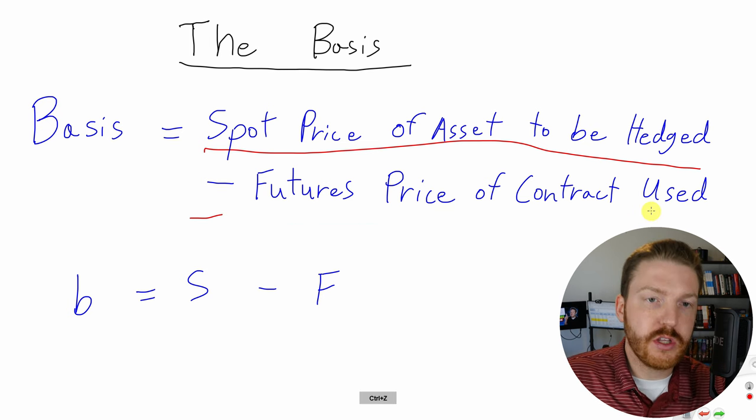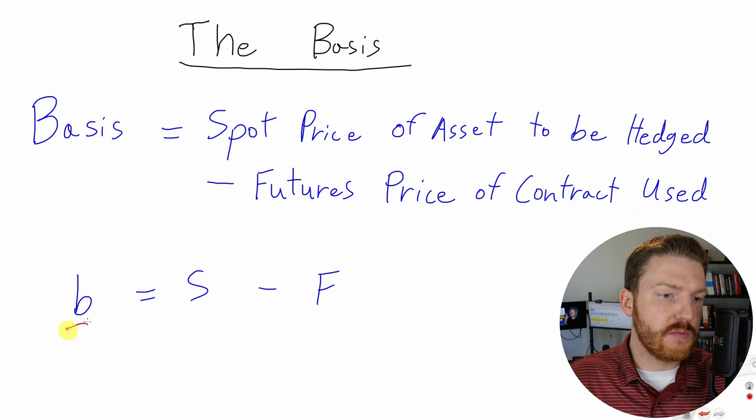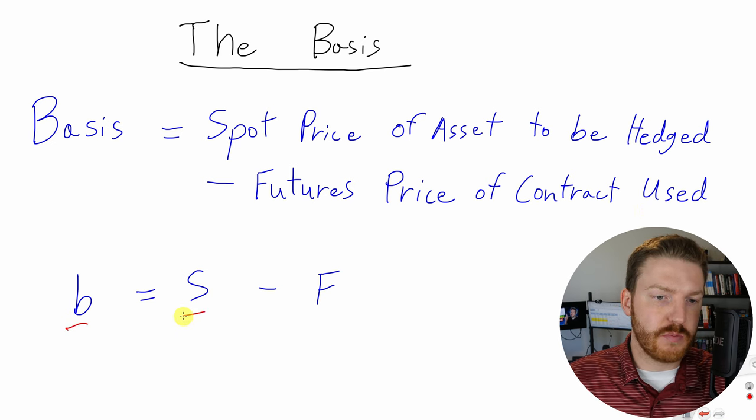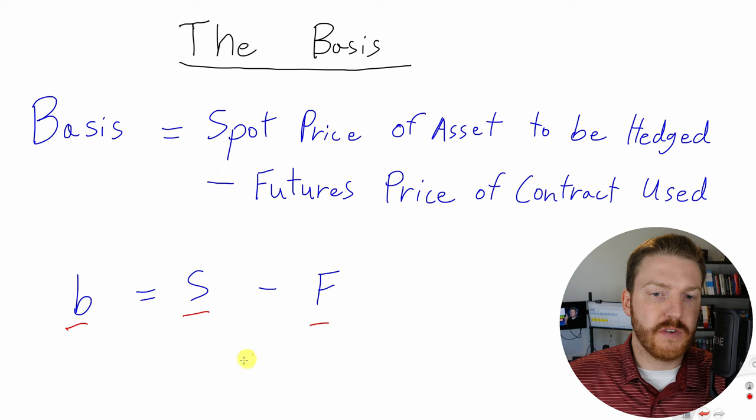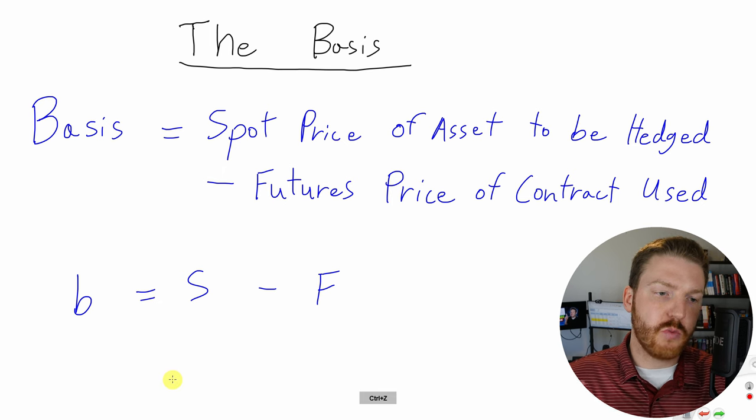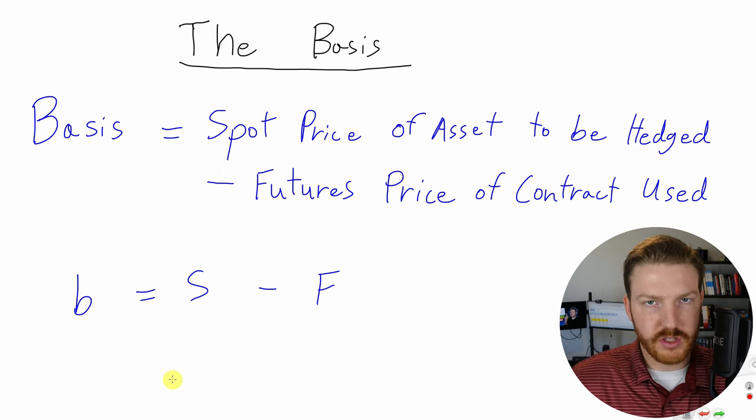We can shorten these by calling basis B, saying that it's equal to the spot price S minus the futures price F. Let's just walk through this with a practical example.